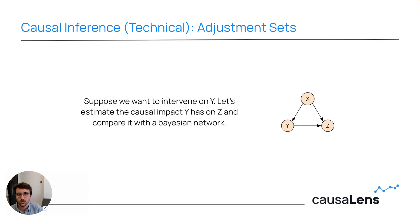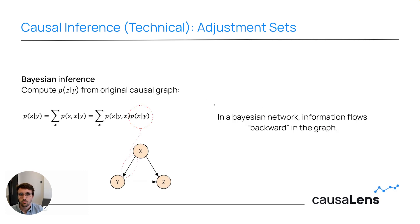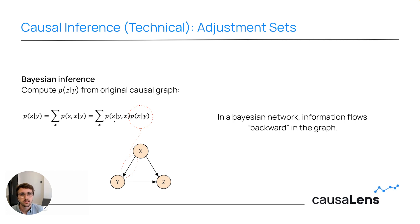Now let's go into the detail about how to actually infer these distributions. To do so, I'll have to talk about adjustment sets. Suppose we want to intervene on our node Y again and observe the effect it has on our target variable Z. Let's also compare the result to that when working with a Bayesian network. In Bayesian networks, we usually have to apply Bayesian inference to obtain our distributions. In particular, we are interested in obtaining the conditional distribution p(z|y) from our original causal graph. We can apply basic Bayesian statistics to obtain this — starting with p(z|y) and rewriting it as an expectation or sum over the variable X.